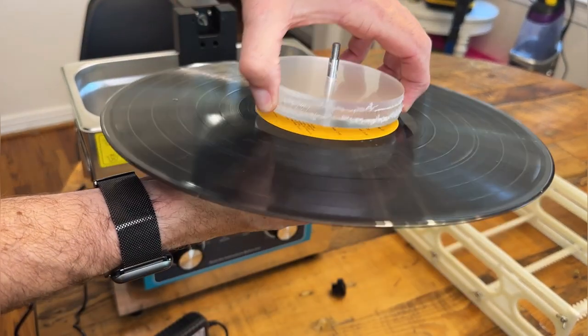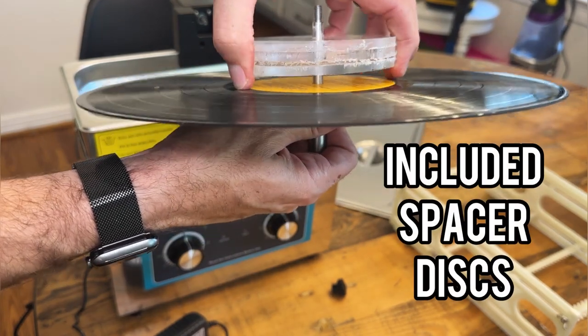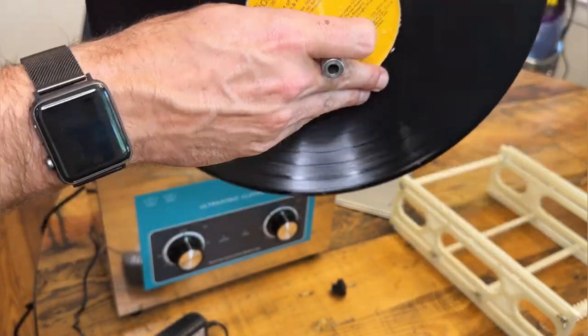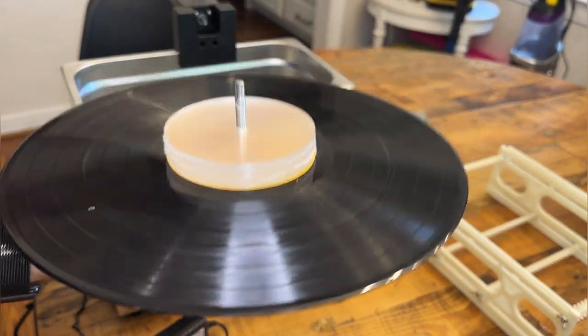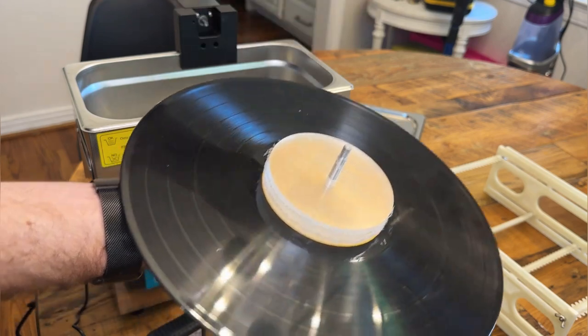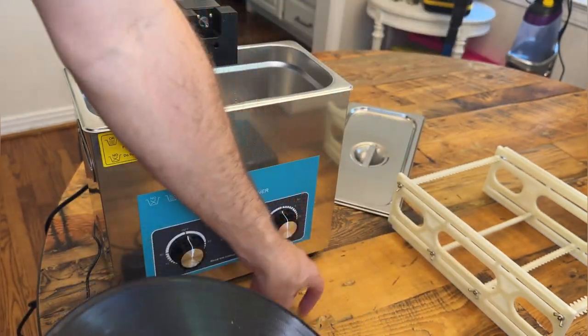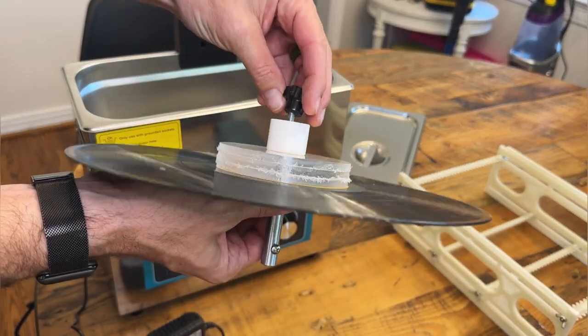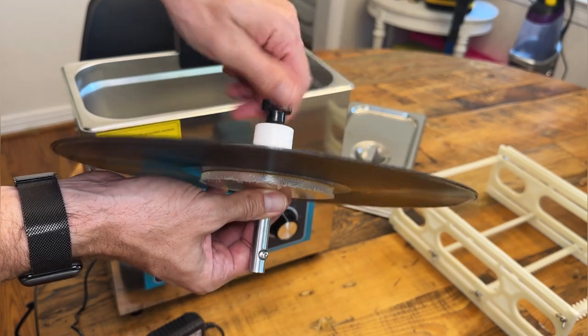You're gonna get these discs that come with it so you can put different thicknesses of records on here. Different sizes of records. Hold LPs, Hold 45s, Hold 33s. Whatever size record you might have. You're gonna put this nut back on and screw the cap on here. Really simple to use.